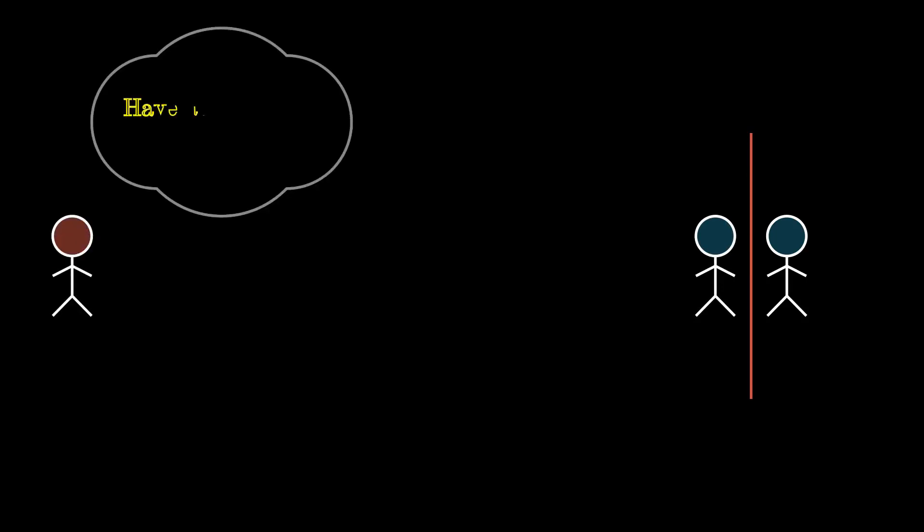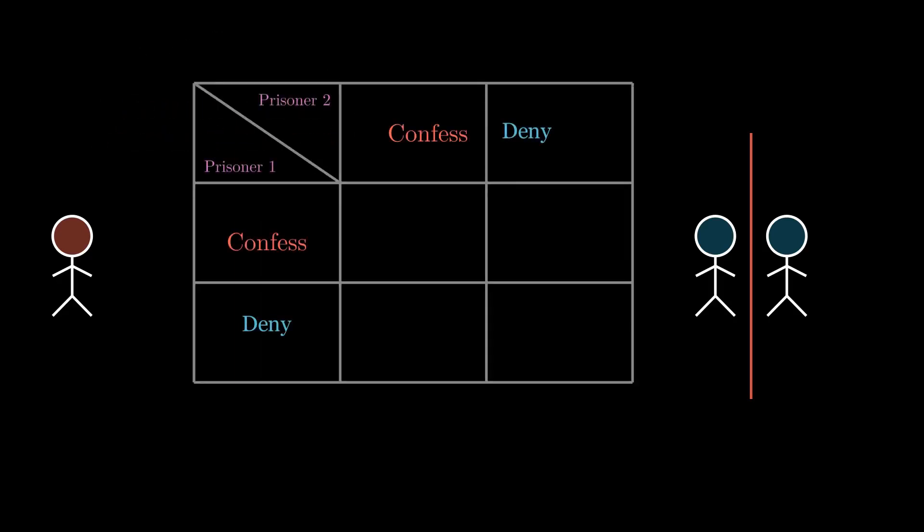Let me start with the introduction to Prisoner's Dilemma first. Two prisoners are taken into custody for their alleged involvement in a heinous crime. They are kept in separate rooms and interrogated. The jailer meanwhile puts forward an interesting condition. If both of them confess to their crime, they get two years in prison.